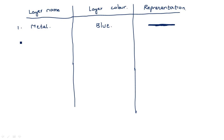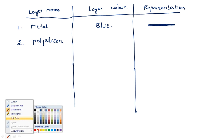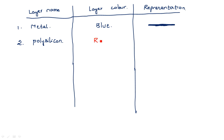The second layer is polysilicon. Polysilicon is a layer and its color is red. You draw a red color line — a stick — for polysilicon. Whenever you find a red color line in your stick diagram, you know it represents the polysilicon layer.